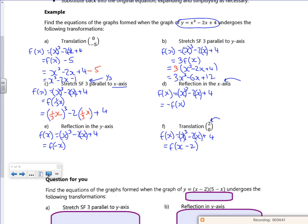Plus 4. So because I've replaced the x with a third x, the third x all cubed will be 1 over 27x. I'll try and fit it in here. Sorry. 1 over 27 x cubed. Then I've got minus 2 thirds x plus 4 there. I didn't have enough room to do that really.